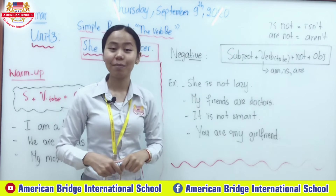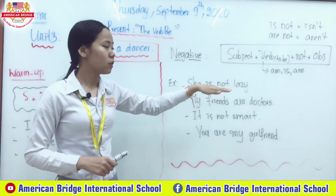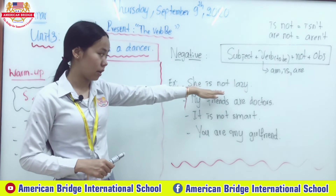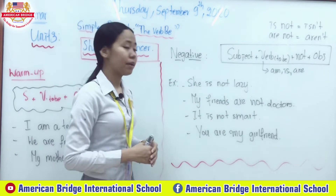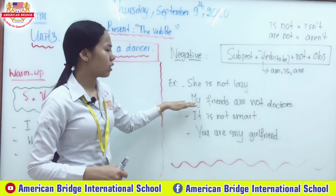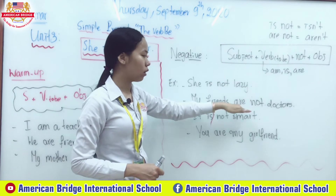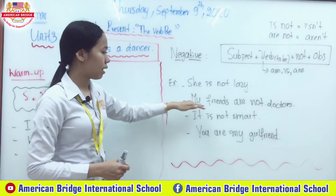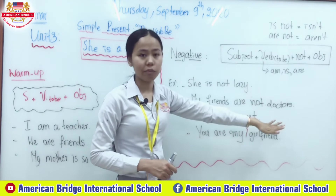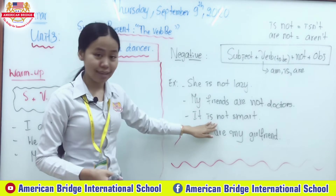Let's look at some examples. 'She is not lazy' — subject 'she,' verb 'to be' is 'is,' then 'not,' then adjective 'lazy.' Second example: 'My friends are not doctors' — or you can write 'My friends aren't doctors.' Subject is 'my friends,' followed by 'are' according to the rule, then 'not,' then 'doctors.'